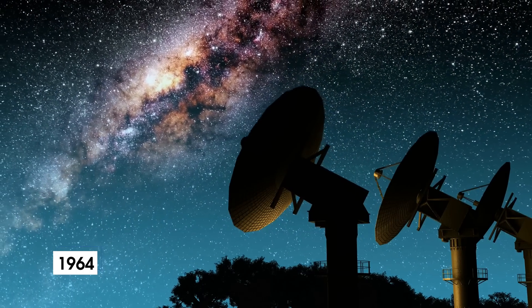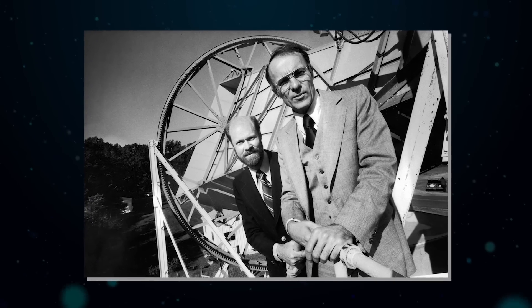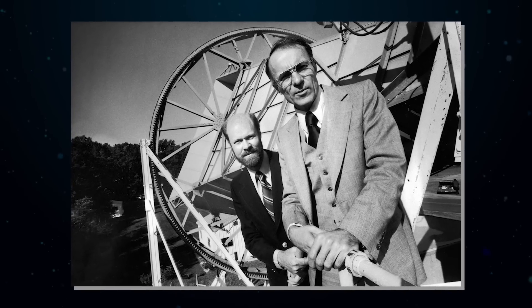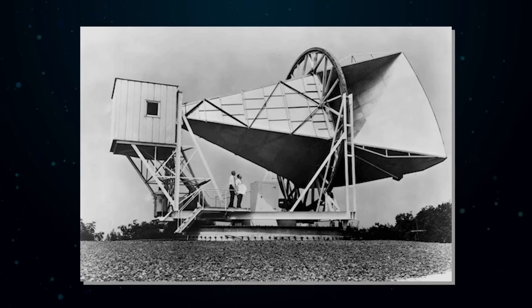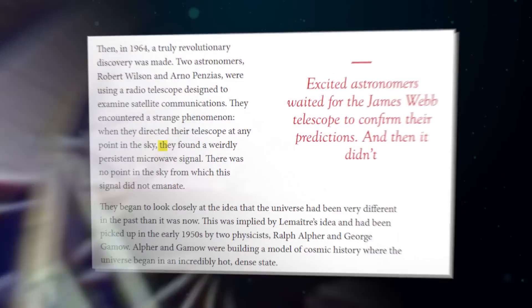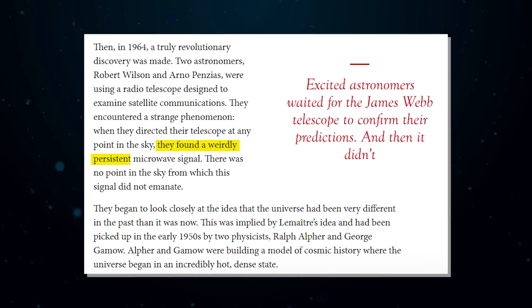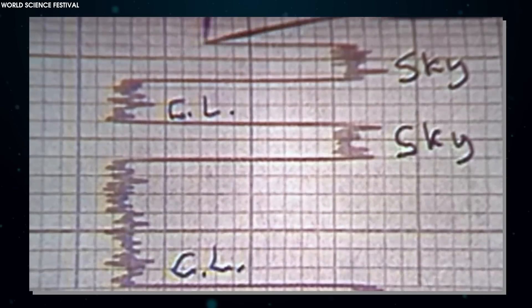Then, in 1964, a truly revolutionary discovery was made. Two astronomers, Robert Wilson and Arno Penzias, were using a radio telescope designed to examine satellite communications. They encountered a strange phenomenon. When they directed their telescope at any point in the sky, they found a weirdly persistent microwave signal. There was no point in the sky from which this signal did not emanate.